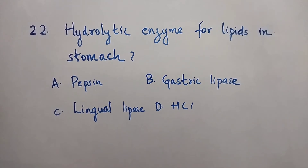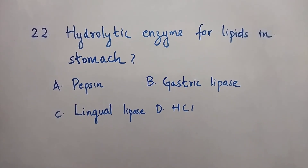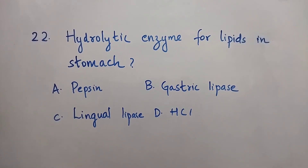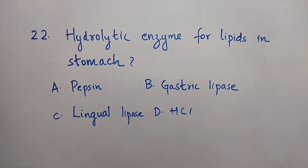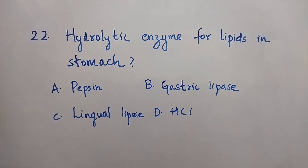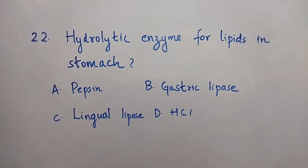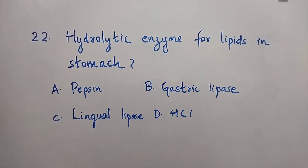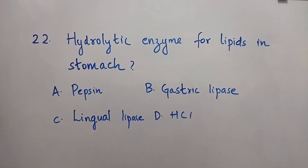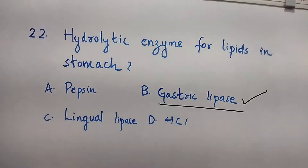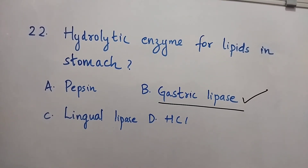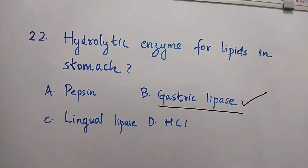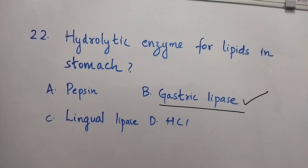Question number 22: Hydrolytic enzyme for lipids in the stomach — Option A: Pepsin. Option B: Gastric lipase. Option C: Lingual lipase. Option D: Hydrochloric acid. The right answer is Option B, Gastric lipase. Gastric lipase is the hydrolytic enzyme for lipids in the stomach.